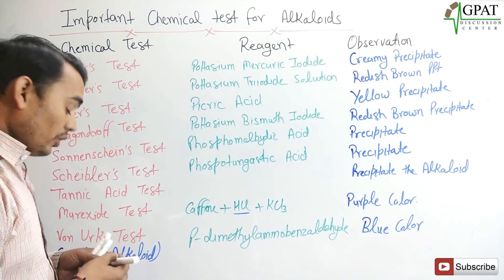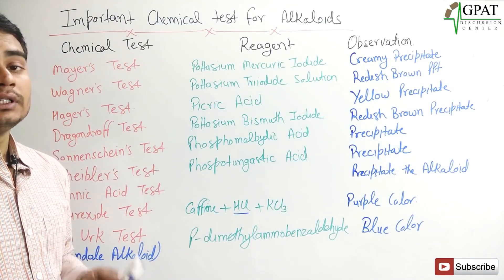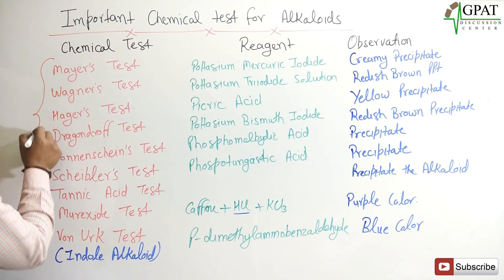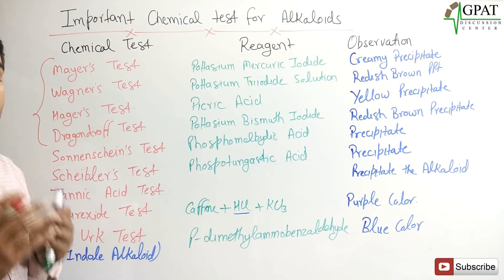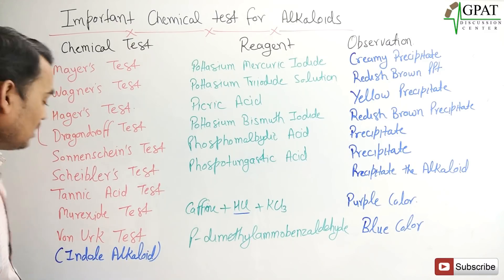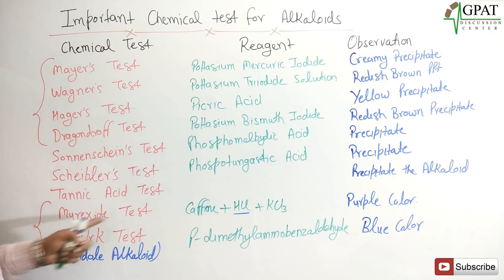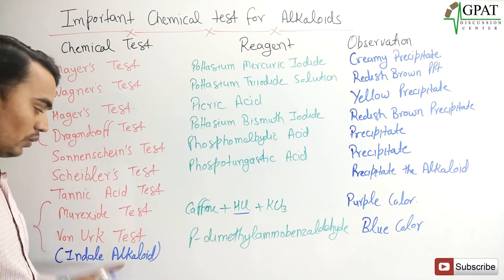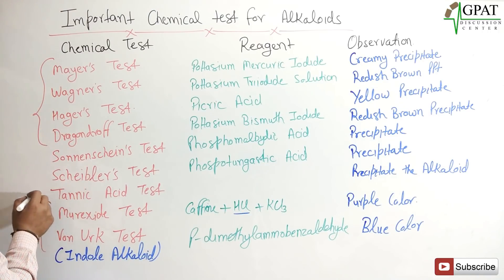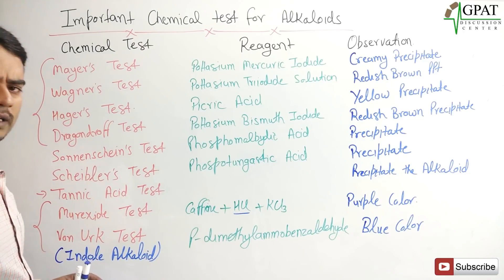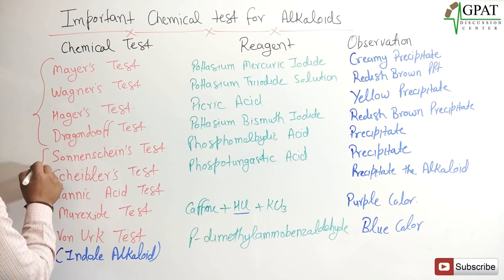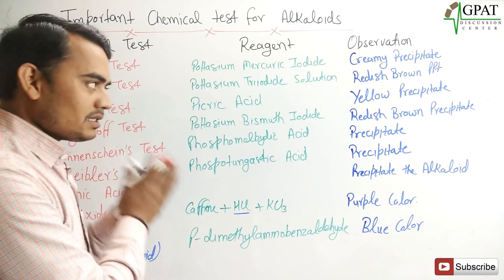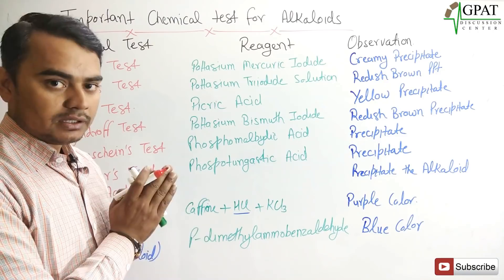These are the important chemical tests for alkaloids. Remember: the first four tests are general identification tests for alkaloids. The murexide test is specific for caffeine, while the Van-Urk test is specific for indole alkaloids. The tannic acid test applies to all alkaloids and gives a precipitate. This is a very important topic — so remember it. Thank you.